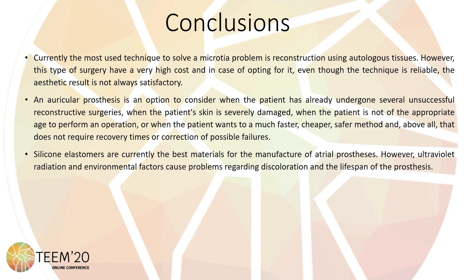Silicone elastomer is currently the best material for the manufacture of auricular prostheses. However, ultraviolet radiation and environmental factors can cause problems such as discoloration and degradation of the prosthesis. Thank you everyone.